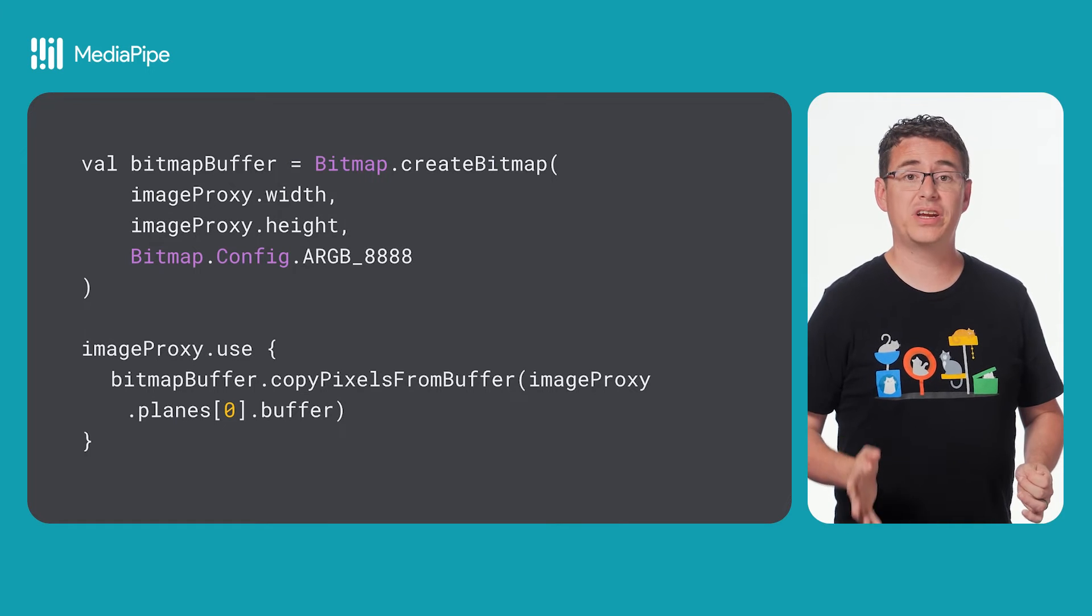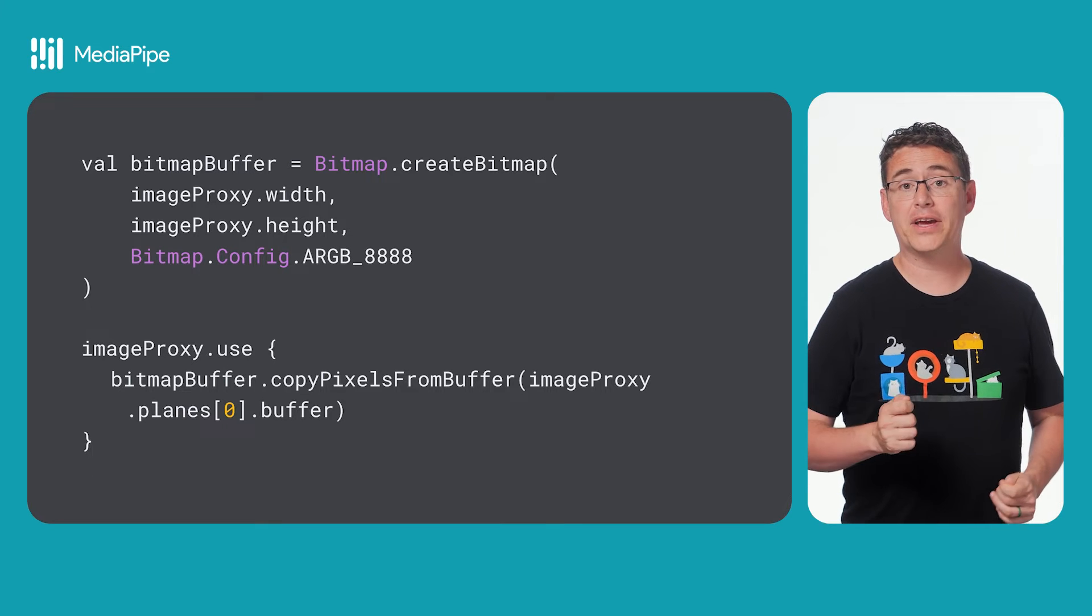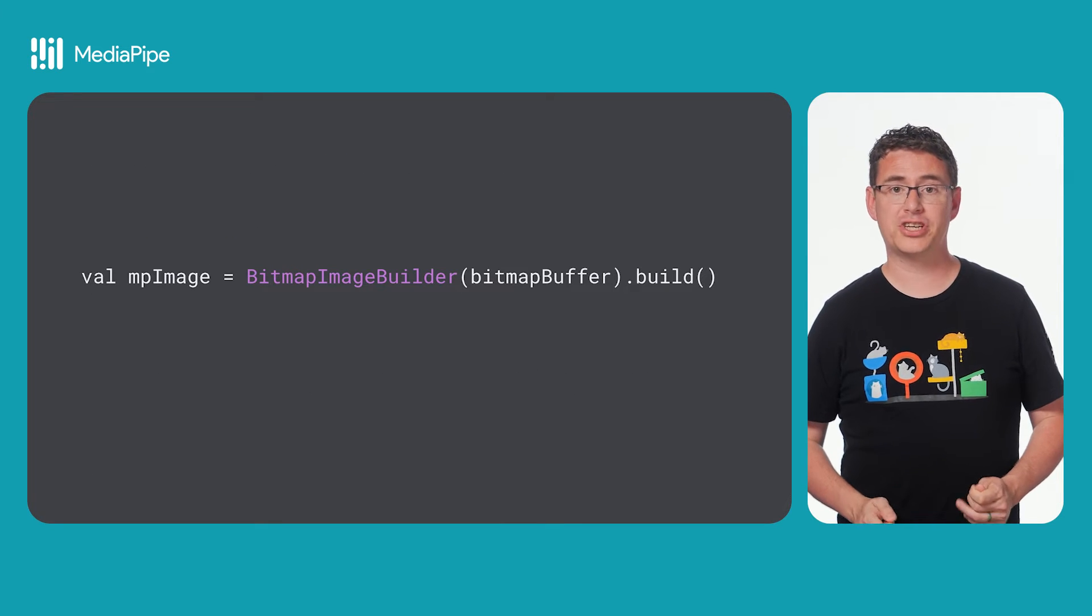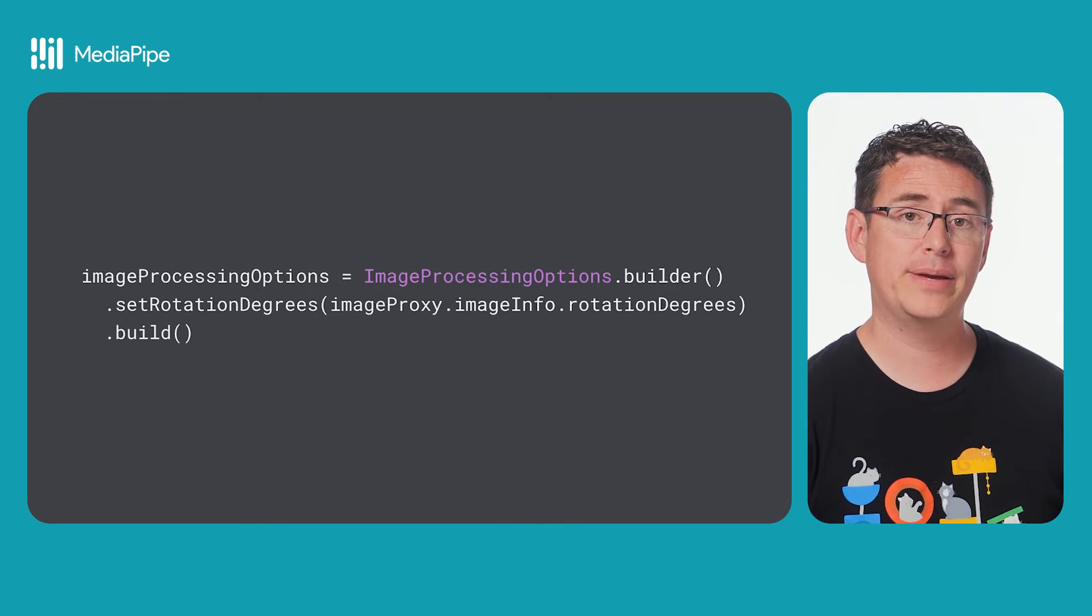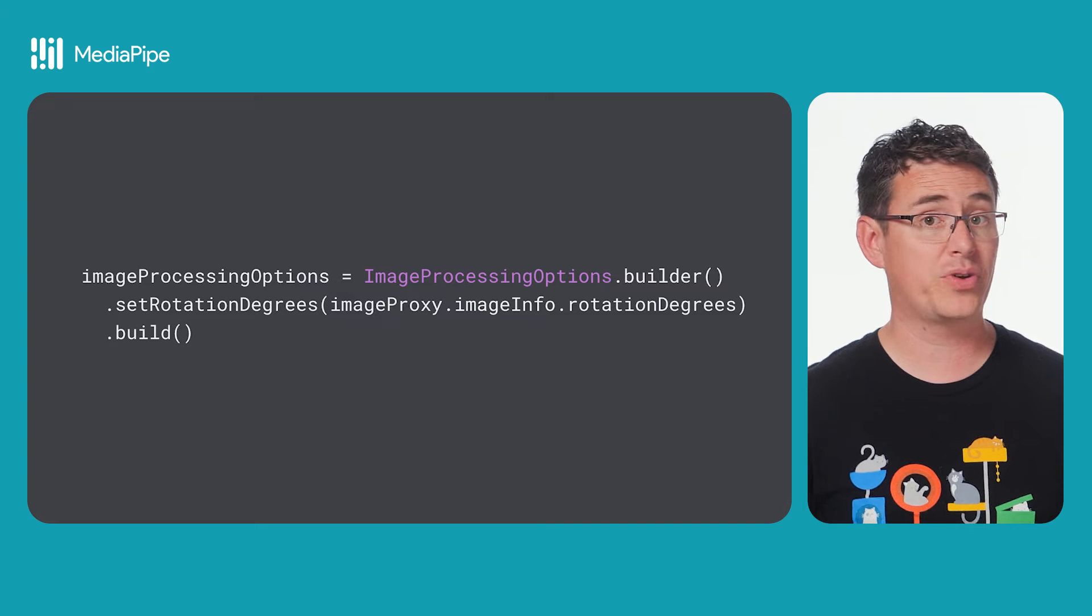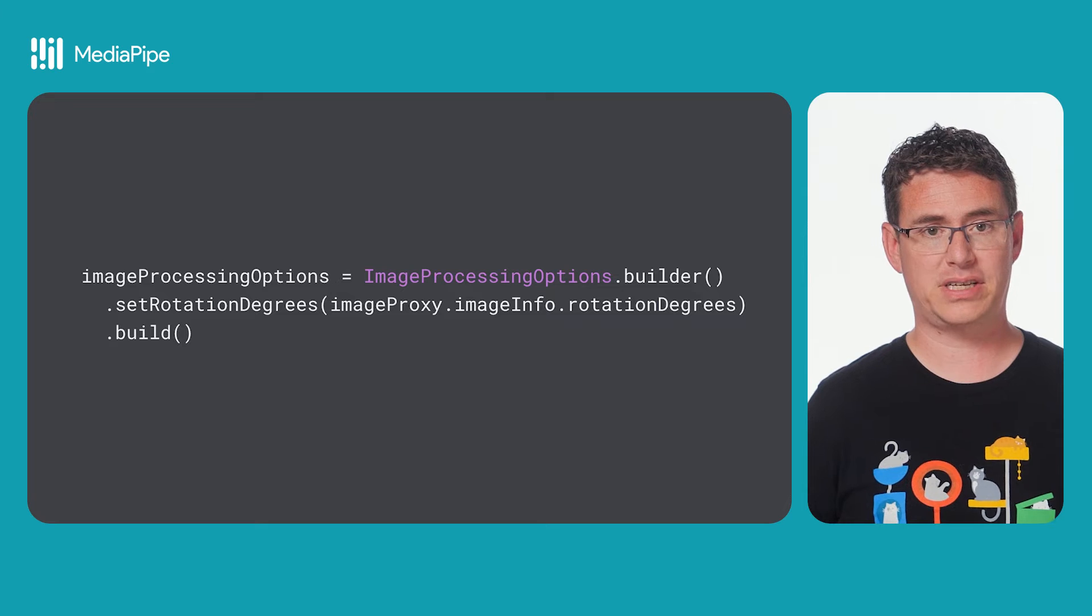The end result of this is that you'll get an image proxy object that you will then turn into a bitmap, and then create a new MediaPipe image object that will go through the inference step. You can also create an optional image processing options object to handle image rotation, letting you match your input camera stream orientation to what your model is expecting.